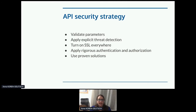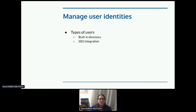Scott Morrison from the API Academy lays out five steps to creating an API security strategy: validate parameters, apply explicit threat detection, turn on SSL everywhere, apply rigorous authentication and authorization, and use proven solutions. There's a PDF of this available online. For portal security, I'm not a security expert and I'd really rather hear from you about what I might have missed — I'll only cover the two things I've personally been involved with.